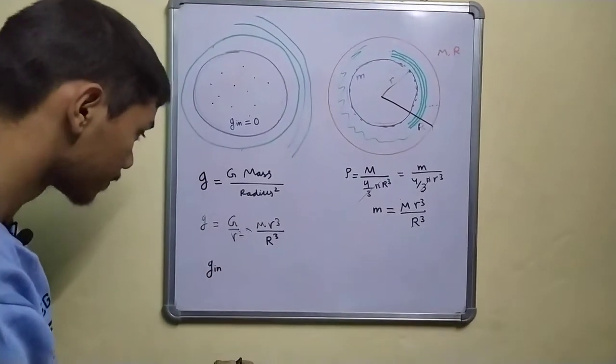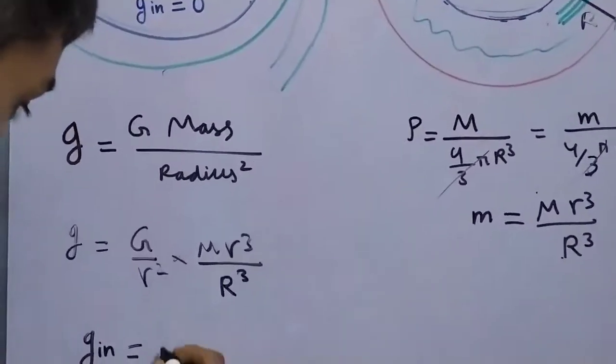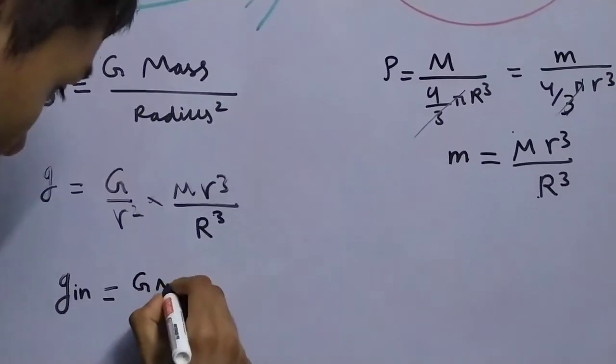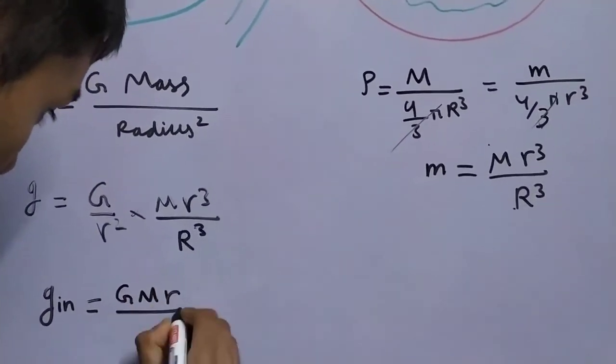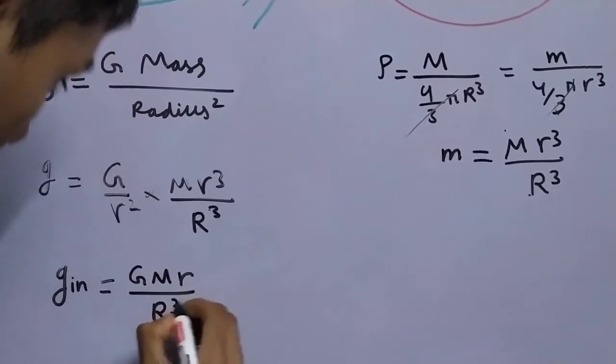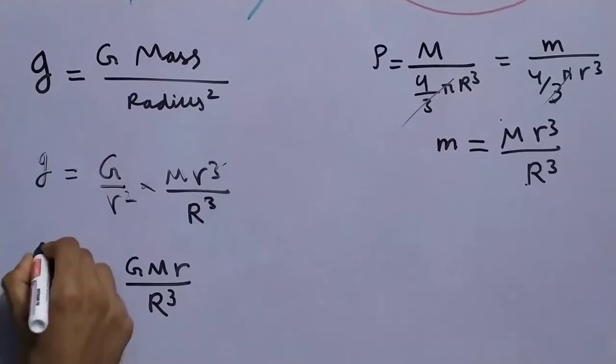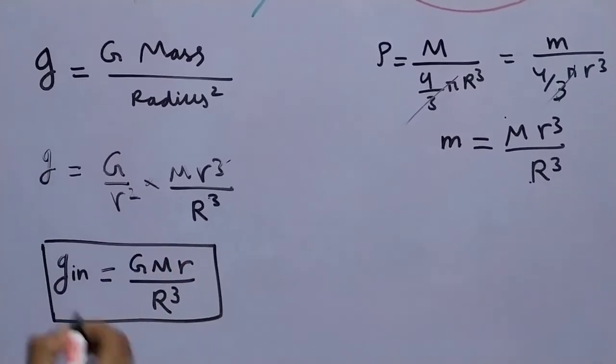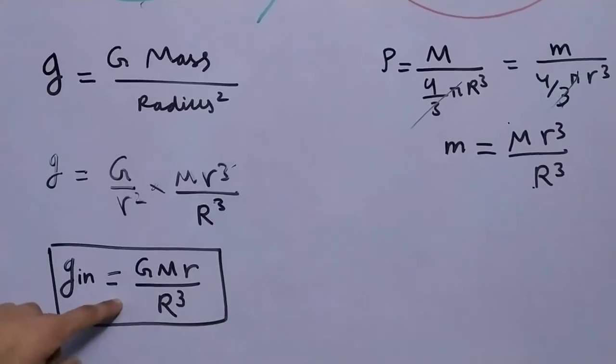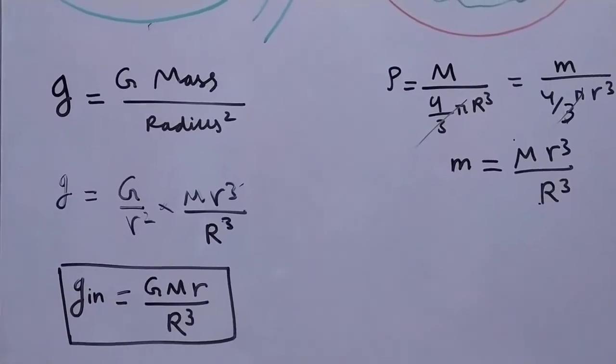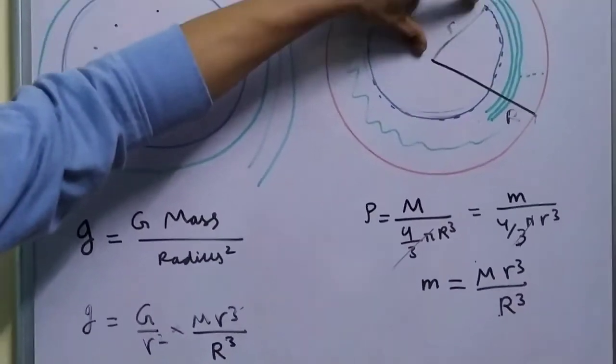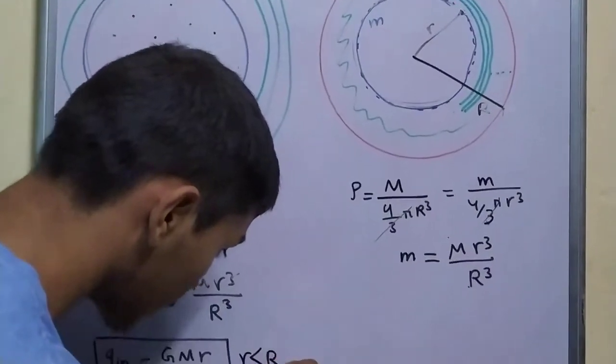So we are left with g at a point inside is equal to G m r divided by r cube. The r square cancels out by r square leaving r. This is our magnitude of the gravitational field at a distance, and obviously small r is less than r.